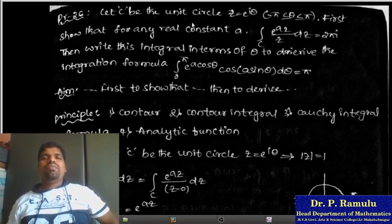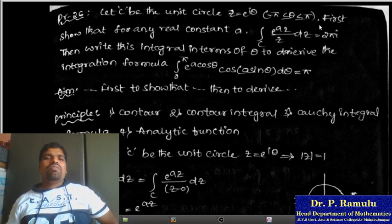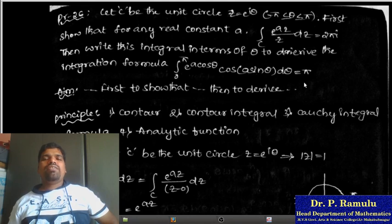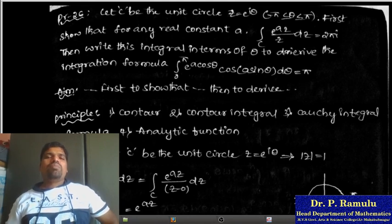Let C be the unit circle z = e^(iθ), where -π ≤ θ ≤ π. First show that for any real constant a, the integration over C of e^(az)/z dz equals 2πi. Then write this integral in terms of θ to derive the integration formula: integral from 0 to π of e^(a cosθ) cos(a sinθ) dθ = π.